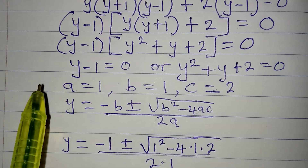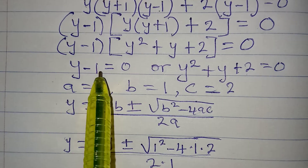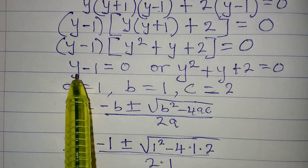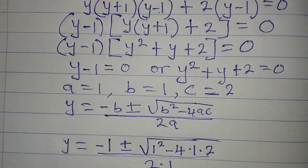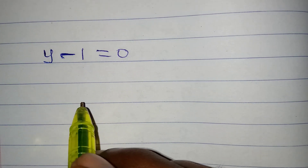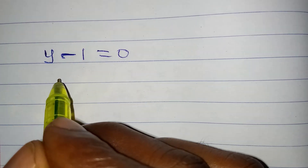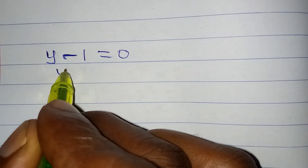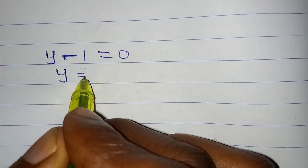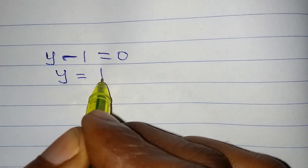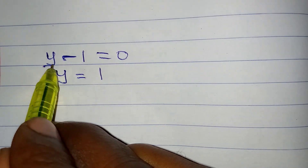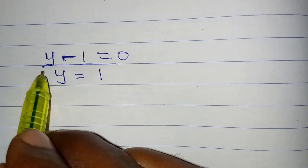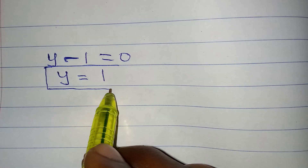Going back to the linear equation: y − 1 = 0, which means y = 1. This is the only solution that is real and satisfies the given equation.